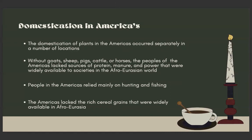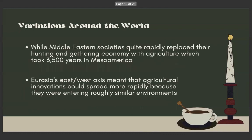Now there were domestications in America. The domestication of plants in the Americas occurred separately in a number of locations. Without goats, sheep, pigs, cattle, or horses, the peoples of the Americas lacked sources of protein, manure, and power that were vitally available to societies in the Afro-Eurasian world. People in the Americas relied mainly on hunting and fishing. The Americas also lacked the rich cereal grains that were widely available in Afro-Eurasia. While Middle Eastern societies quite rapidly replaced their hunting and gathering economy with agriculture, this took 3,500 years in Mesoamerica. The Eurasian east-west axis meant that agricultural innovations could spread more rapidly because they were entering roughly similar environments.